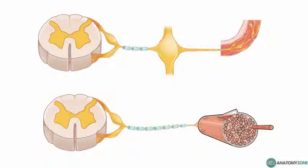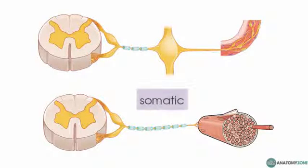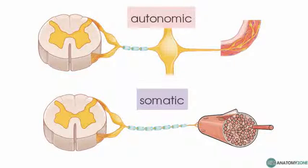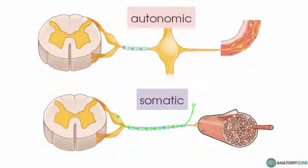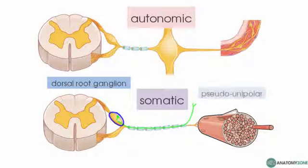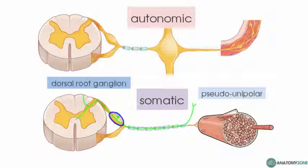The next point is the difference in the efferent component of the autonomic nervous system in comparison to the somatic nervous system. In the somatic nervous system, a peripheral stimulus is picked up by a sensory receptor and brought back into the central nervous system by the sensory neuron. The sensory neuron has its cell bodies in the dorsal root ganglion and this pseudo-unipolar neuron passes via the dorsal root into the dorsal aspect of the spinal cord, ascending to the brain via the dorsal columns or the anterolateral system, the spinothalamic tract.